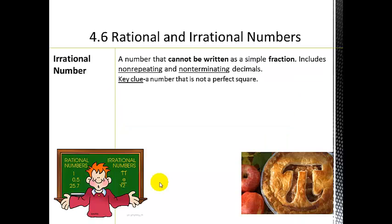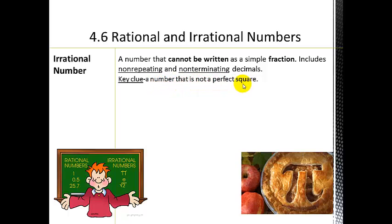An irrational number is a number that cannot be written as a simple fraction. It includes non-repeating and non-terminating decimals. A key clue when identifying rational vs. irrational: if it's a non-repeating and non-terminating decimal, it's irrational. Be careful using a calculator — it might show a terminating result when it really isn't. Another key clue is that it's a number that is not a perfect square.